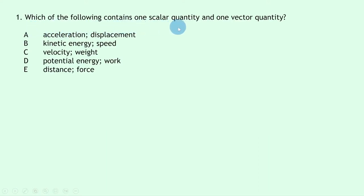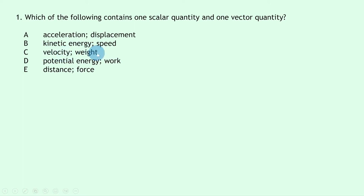Question 1 asks which of the following contains one scalar quantity and one vector quantity. A scalar quantity has magnitude only, whereas a vector quantity has both magnitude and direction. Option A: acceleration and displacement are both vectors. Option B: kinetic energy and speed are both scalars. Option C: velocity and weight are both vectors since weight is a force. Option D: potential energy and work done are both scalars. Option E: distance is scalar and force is vector, so the answer is E.